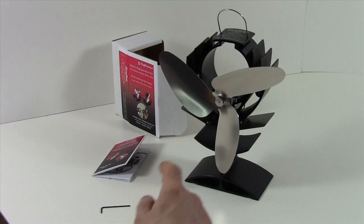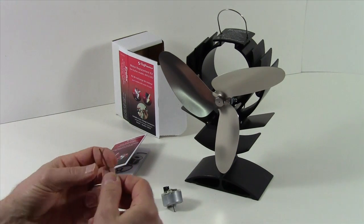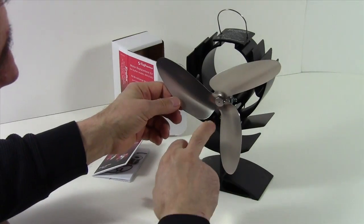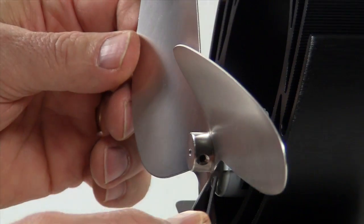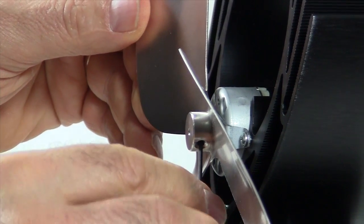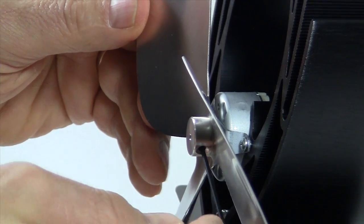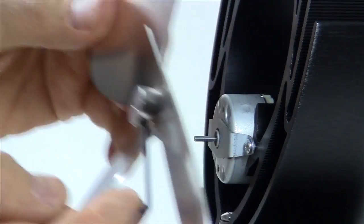The first step is to remove the blade from the Ecofan. And to do that, we're going to use the Allen key and insert it into this tiny hole located on the blade. Turn it counter-clockwise to loosen the set screw. And now the blade simply slides off the shaft.